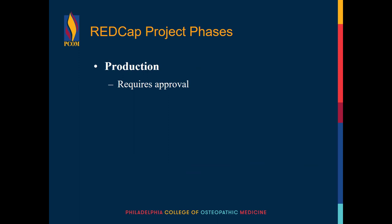Once you have everything completely designed and tested multiple times, you'll be ready to submit a request to move your REDCap project to production by emailing a PDF of your IRB approval documentation to redcap.pcom.edu. After your project has been moved to production, you'll be ready to start collecting data. When you have all your data, you'll be ready to export it for analysis. Once you have started collecting data in a project moved to production, any critical changes to your project will require further review by a REDCap administrator.